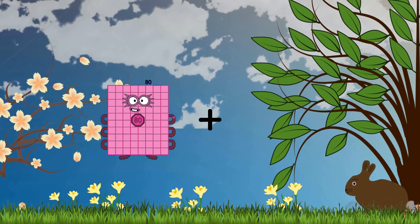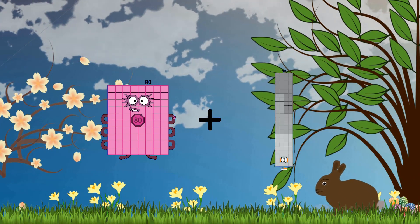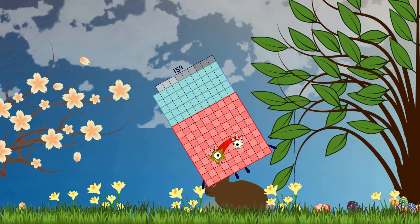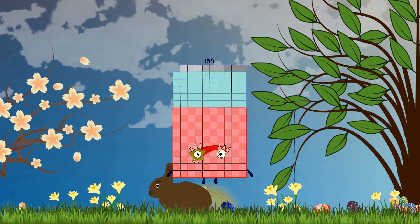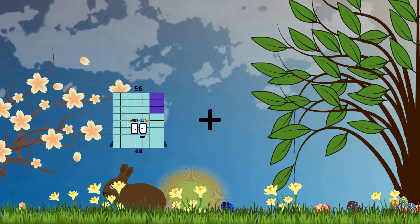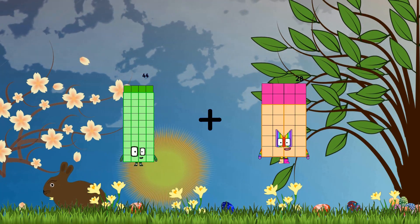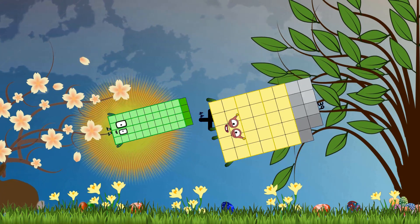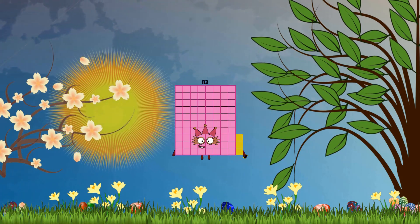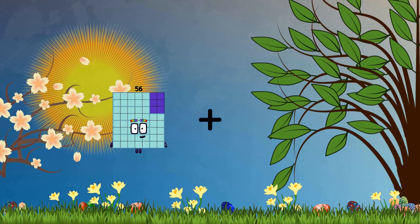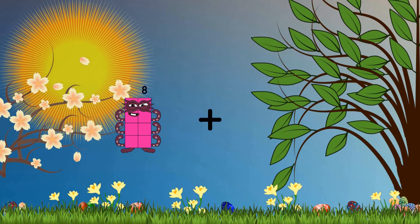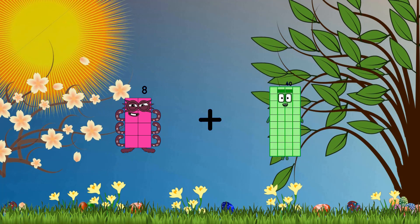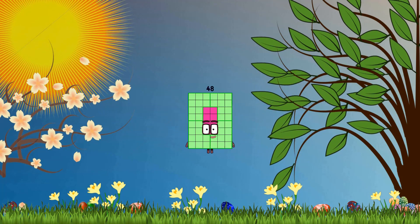80 plus 79 equals 159. 44 plus 39 equals 83. 8 plus 40 equals 48.